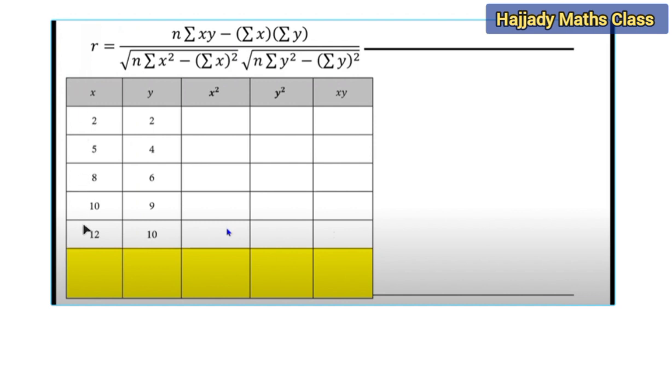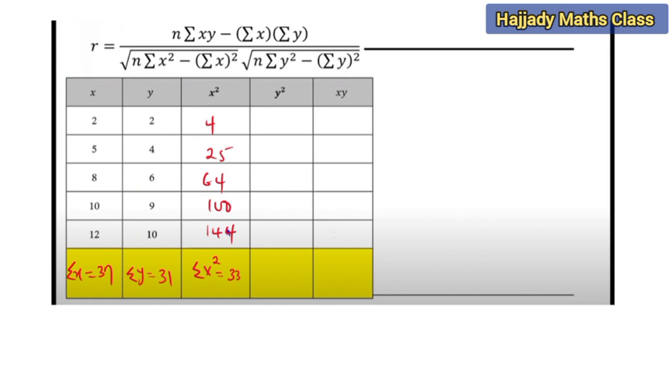The formula is given as shown above. So there's a need for us to complete this table. This is our x from the question and this is my y from the question. The first thing we have to compute is the addition of my x, which is called summation x. Adding this together is going to give me 37. And for summation x squared, 2 squared is 4, 5 squared is 25, 8 squared is 64, and 12 squared is 144. Adding this together gives us 337.